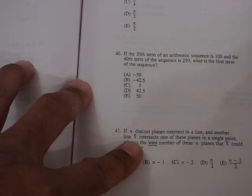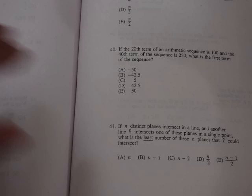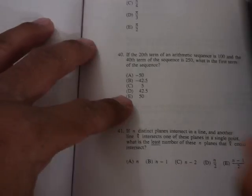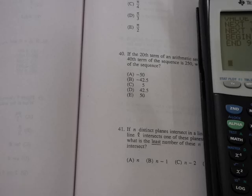So let me read the question. It says: if the 20th term of an arithmetic sequence is 100 and the 40th term of the sequence is 250, what is the first term of the sequence? Pretty straightforward problem.